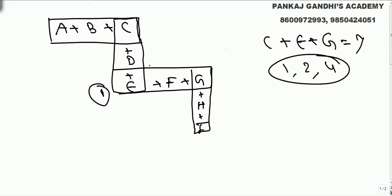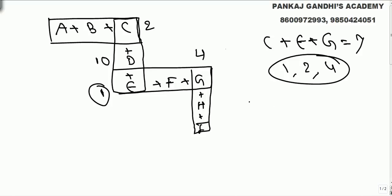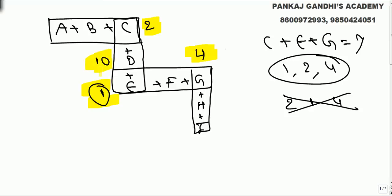If we take E as 1, then C and G are 2 and 4 in some order. But then for the summation C plus D plus E to equal 13, with E=1 and C=2, D would have to be 10. Similarly if G is 2, F becomes 10. The maximum permissible value is 9, so E cannot be 1.